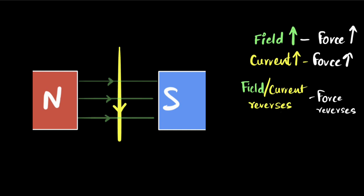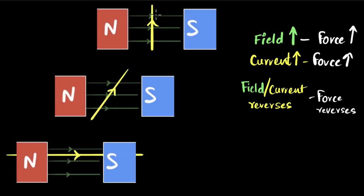Finally, let's change the angle between the current carrying wire and the magnetic field. So in this case, we have 90 degrees over here. Then we'll reduce the angle in the second case. And then third, we'll reduce it all the way to zero. We'll make it parallel. What do you think will happen?